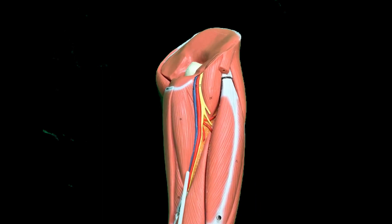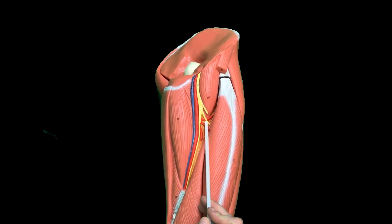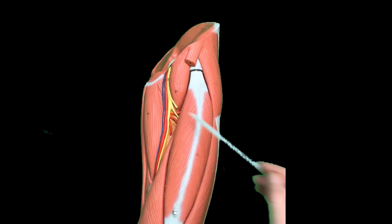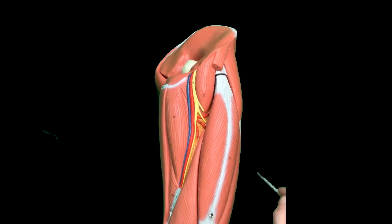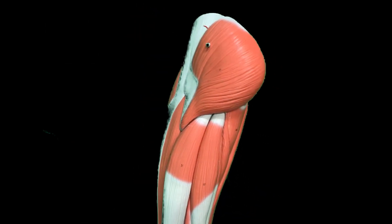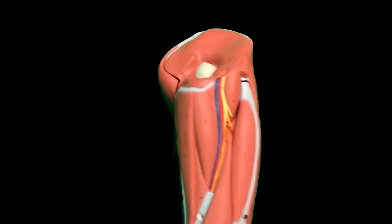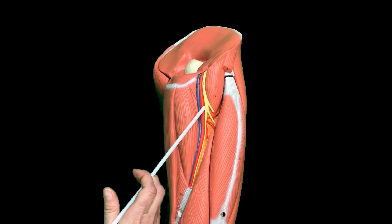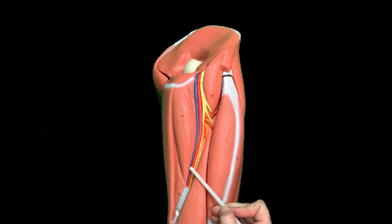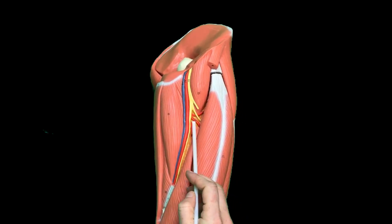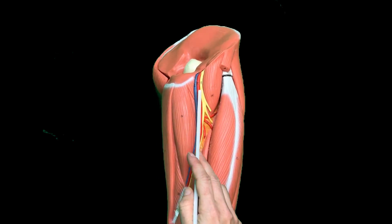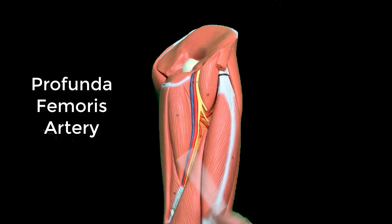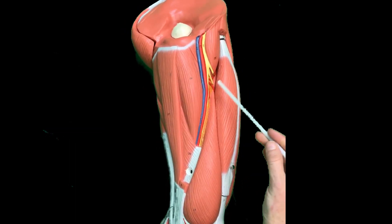The artery does have a deep branch, which we call the profunda femoral artery, and you can see it bifurcating laterally. That profunda femoral artery goes out the back of the leg to supply the posterior compartment, including the hamstring muscles. We used to say the segment from the inguinal ligament to the bifurcation was the 'common femoral,' and then the two divisions were the 'superficial femoral' and 'profunda femoral,' but now we simply call it the femoral artery, distinguishing the deep branch as the profunda femoral artery — 'profundus' meaning deep.